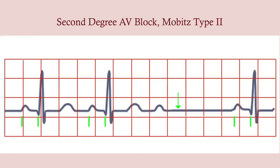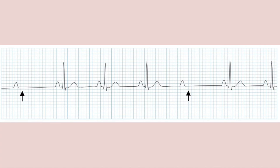Mobitz type 2 is different — the PR interval is normal, but then you get a dropped beat. There's no progressive prolongation, just the sudden drop. You can see the PR interval is normal, but there's a P wave with no corresponding QRS complex.